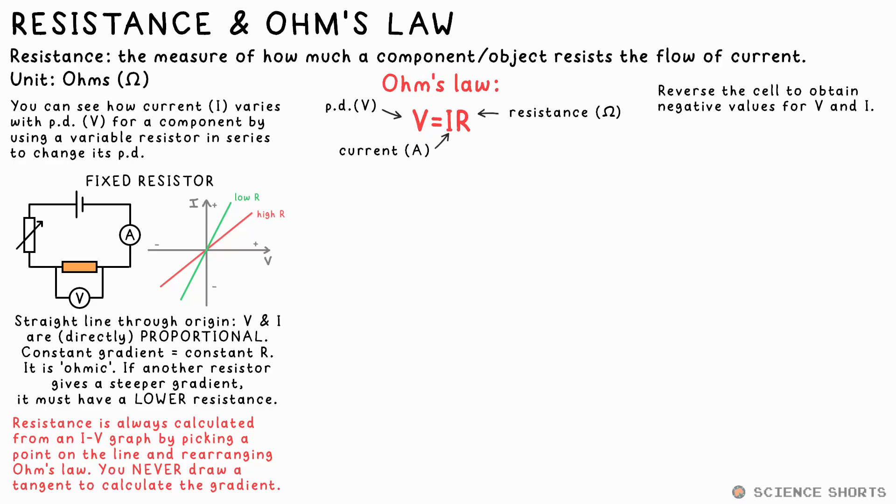For a resistor, you'll end up with the same answer no matter what point you pick. If you repeat the same experiment for a bulb in place of the resistor, though, you'll end up with a curved graph like this instead. This shows that the resistance is changing, the resistance of the metal filament in the bulb. In fact, you'll find that any metal has a changing resistance if you increase the PD and current. They're non-ohmic.